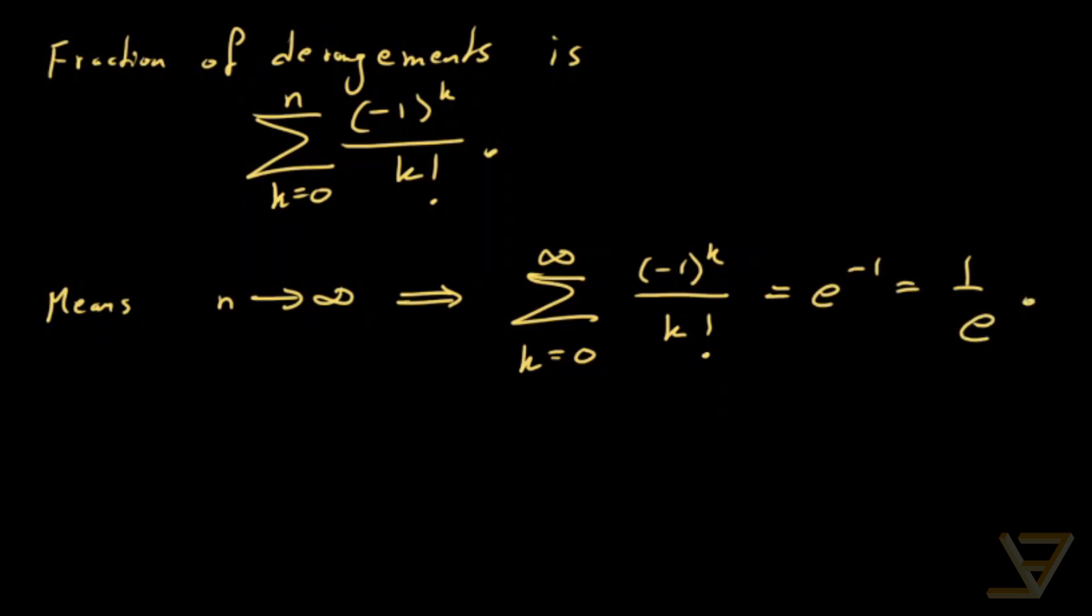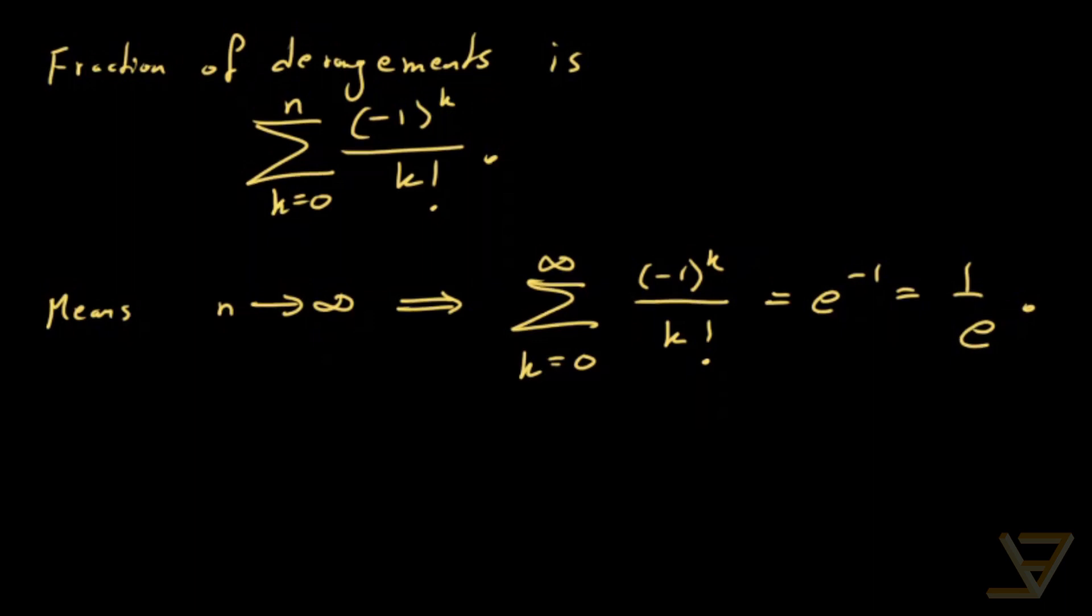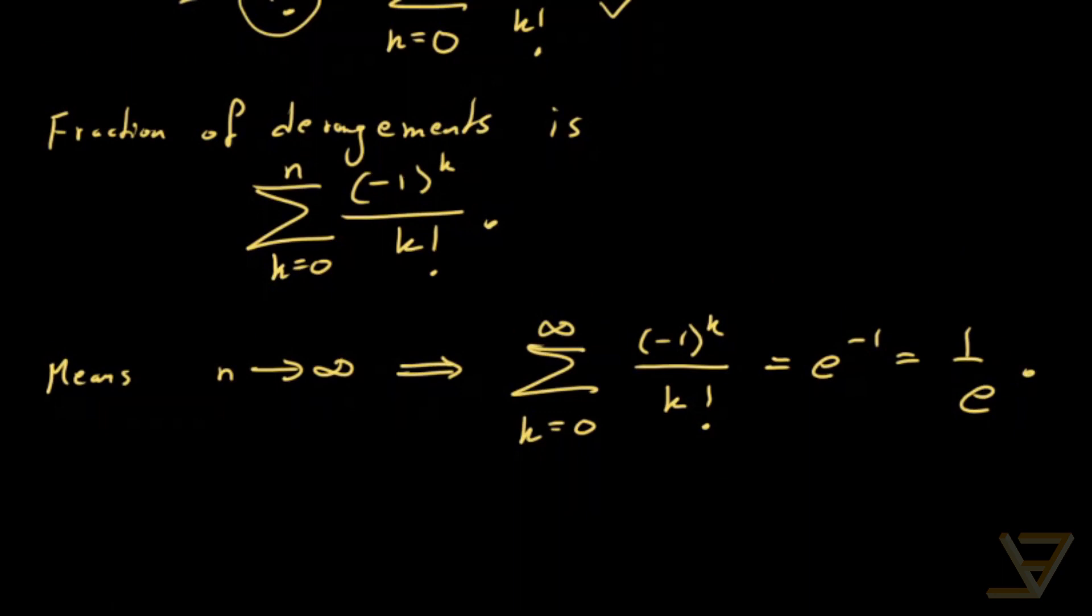So amazingly the fraction of bijections that are derangements approaches 1 over e as n goes to infinity. Thanks for watching and I'll see you next time.